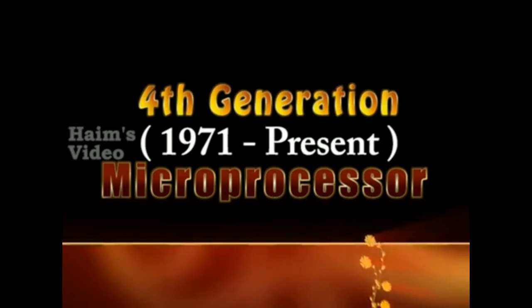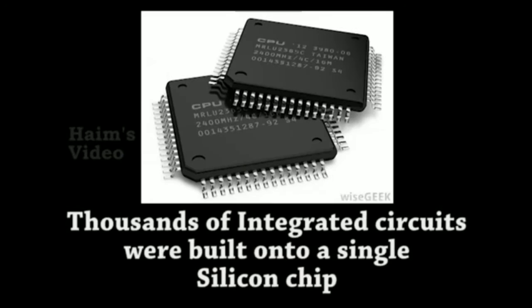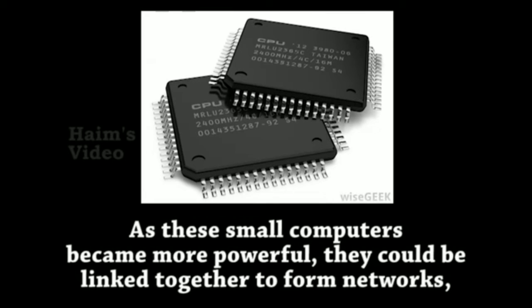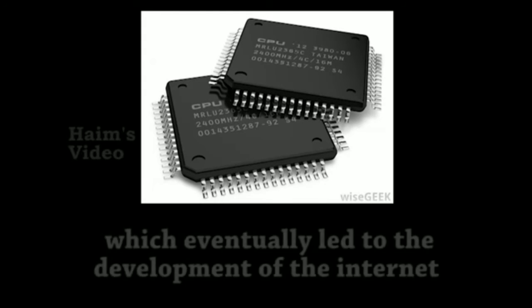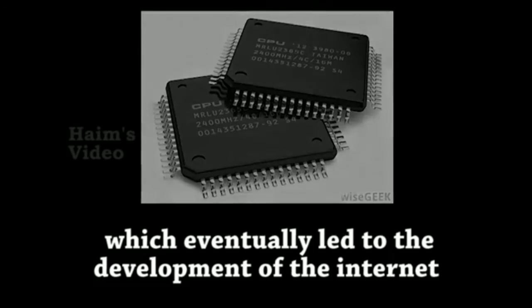Fourth generation, from 1971 to present — the microprocessor. Thousands of integrated circuits were built onto a single silicon chip. As these small computers became more powerful, they could be linked together to form networks, which eventually led to the development of the internet.